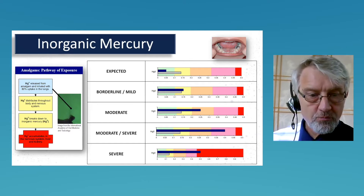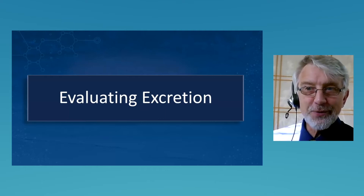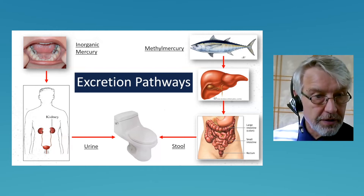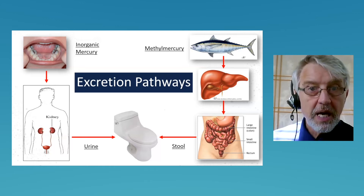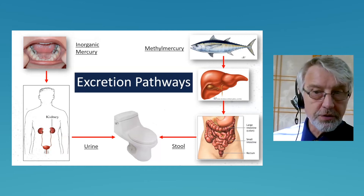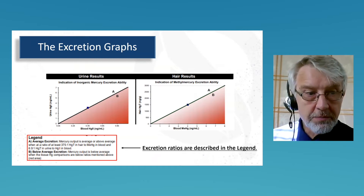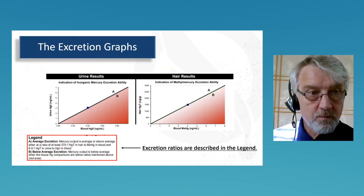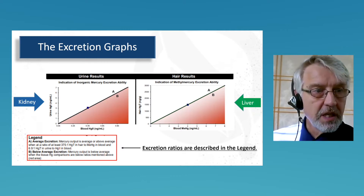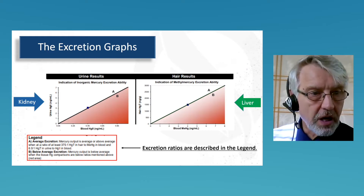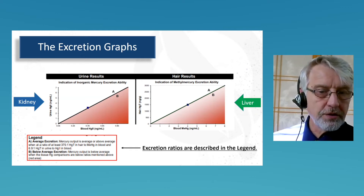Now let's look at excretion — this is where it gets exciting. Inorganic mercury is excreted through urine, filtered out through the kidneys. The liver excretes methylmercury, which goes out through the stool. On the bottom half of page one, just below the table, you'll see red and white graphs: the excretion graphs on the left are urine results and on the right are hair results. So on the left we're looking at kidney excretion, and on the right we're looking at liver excretion — and the ratios, which are described in the legend.